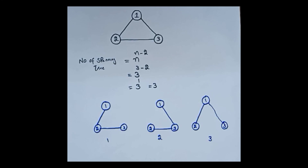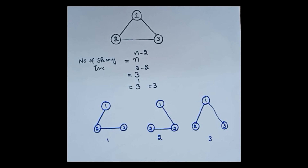To determine the number of possible spanning trees of a complete graph, there is a very simple formula that is n to the power n minus 2. Hope you will understand.